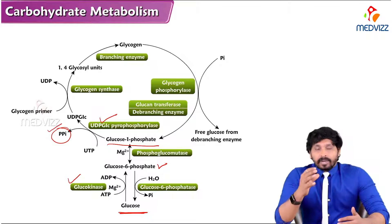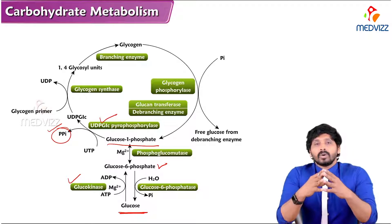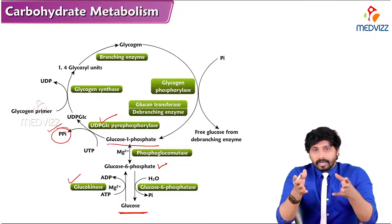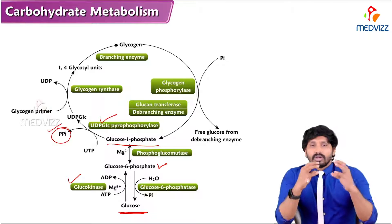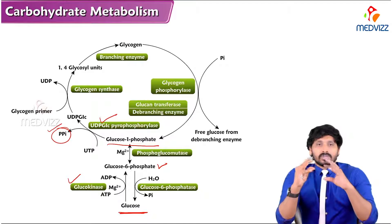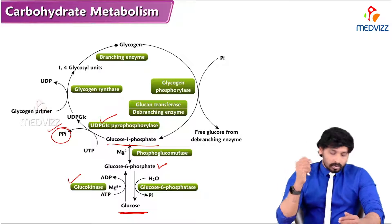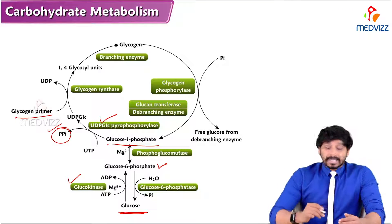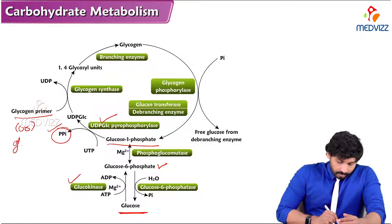UDP-glucose is then transferred to the glycogen primer. The glycogen primer, also known as glycogenin, is a proteoglycan — a combination of carbohydrate and protein. Glycogenin consists of four to five glucose units in a short sequence associated with a protein.